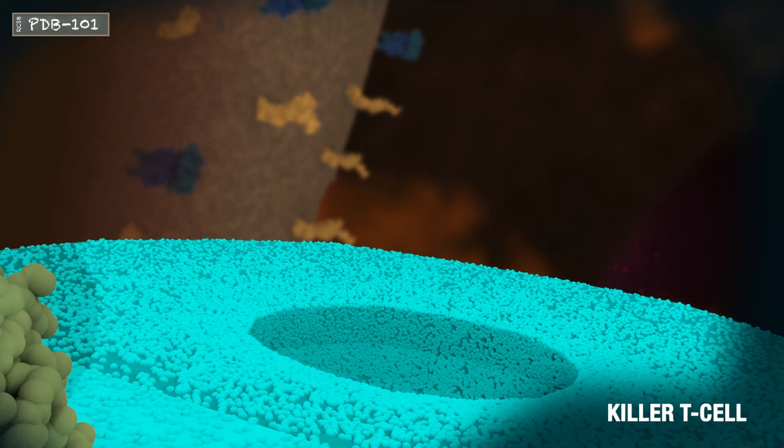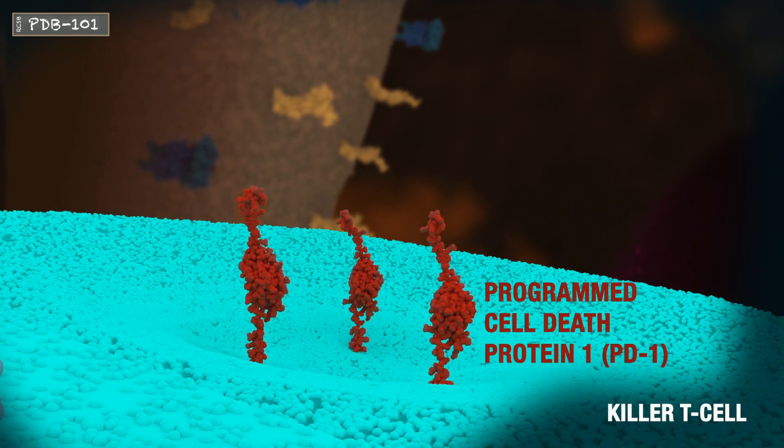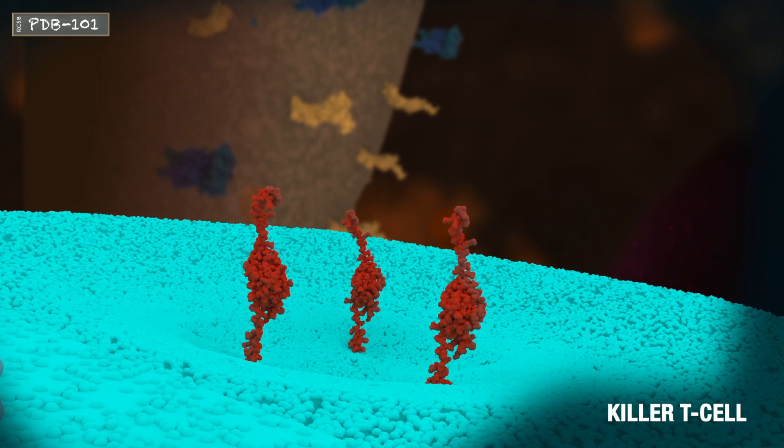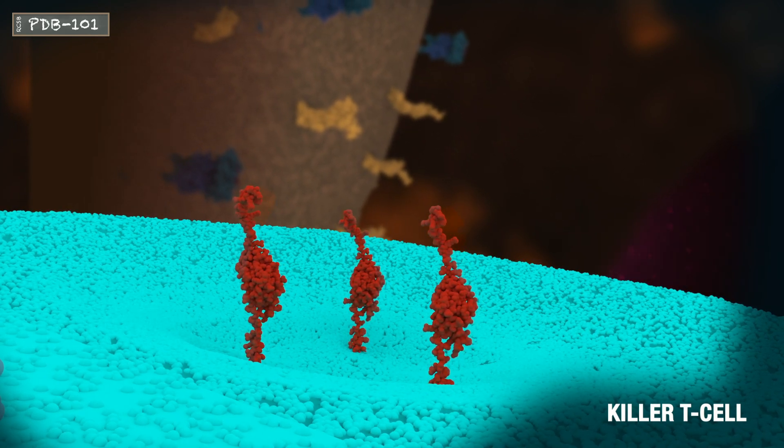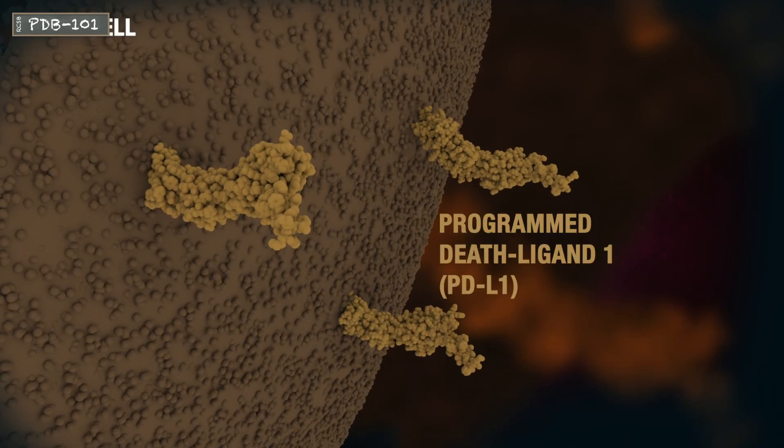Active killer T cells express a downregulation receptor called programmed cell death protein 1, or PD-1, which acts like an off switch when PD-1 on the surface of the killer T cell binds to its complementary programmed cell death protein ligand, or PD-L1.